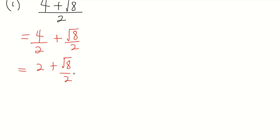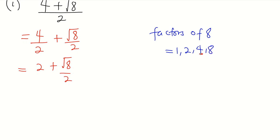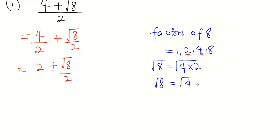This is not our final solution — we can break it down further by simplifying square root of 8. The factors of 8 are 1, 2, 4, and 8. The perfect square among these is 4, and 4 times 2 gives 8. So square root of 8 equals square root of 4 times 2, which equals square root of 4 times square root of 2, giving us 2 square root of 2. Substituting back, our solution becomes 2 plus 2 square root of 2, all divided by 2.